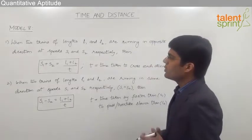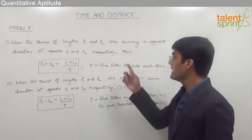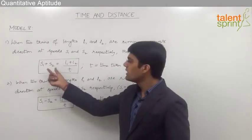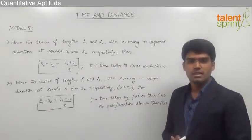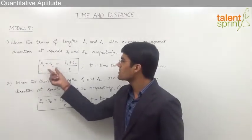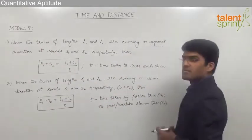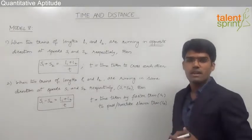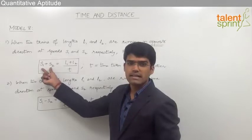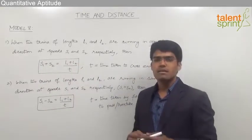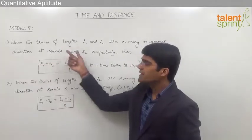When two trains of lengths L1 and L2 are running in opposite direction at speeds S1 and S2 respectively, then the equation to use is S1 plus S2 equals to L1 plus L2 divided by T, where T is the time taken to cross each other. This equation is in the form of speed equals distance by time. We take the speed as S1 plus S2 because for opposite direction the relative speed is the sum of the speeds. The distance to be traveled is L1 plus L2 divided by time.